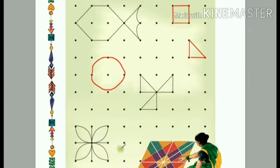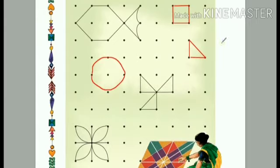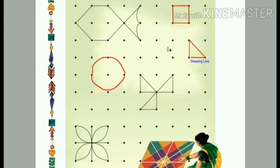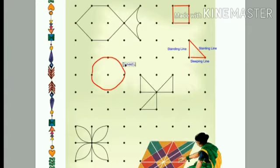You have to copy the drawing. Okay students, let's identify — here is which line? It is a sleeping line. For the triangle, which line would it be? It is a standing line. The last line is a slanting line. This is the same way you have to identify lines in a figure. A circle is made up of curved lines, so you have to write there a curved line. This way you have to identify the shapes and their lines.